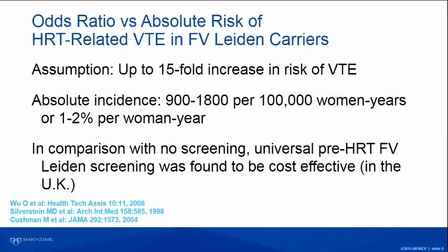If you assume up to a 15-fold increased risk of venous thromboembolism — that's a relative risk — that translates into an absolute risk of about 1–2% per woman year, which is pretty common. This analysis from the United Kingdom found it to be cost-effective for universal pre-HRT prescription screening for Factor V Leiden. If a woman has Factor V Leiden, you may want to avoid hormone replacement therapy. But I want to emphasize this is based on UK data and may not be applicable to the United States or other countries.